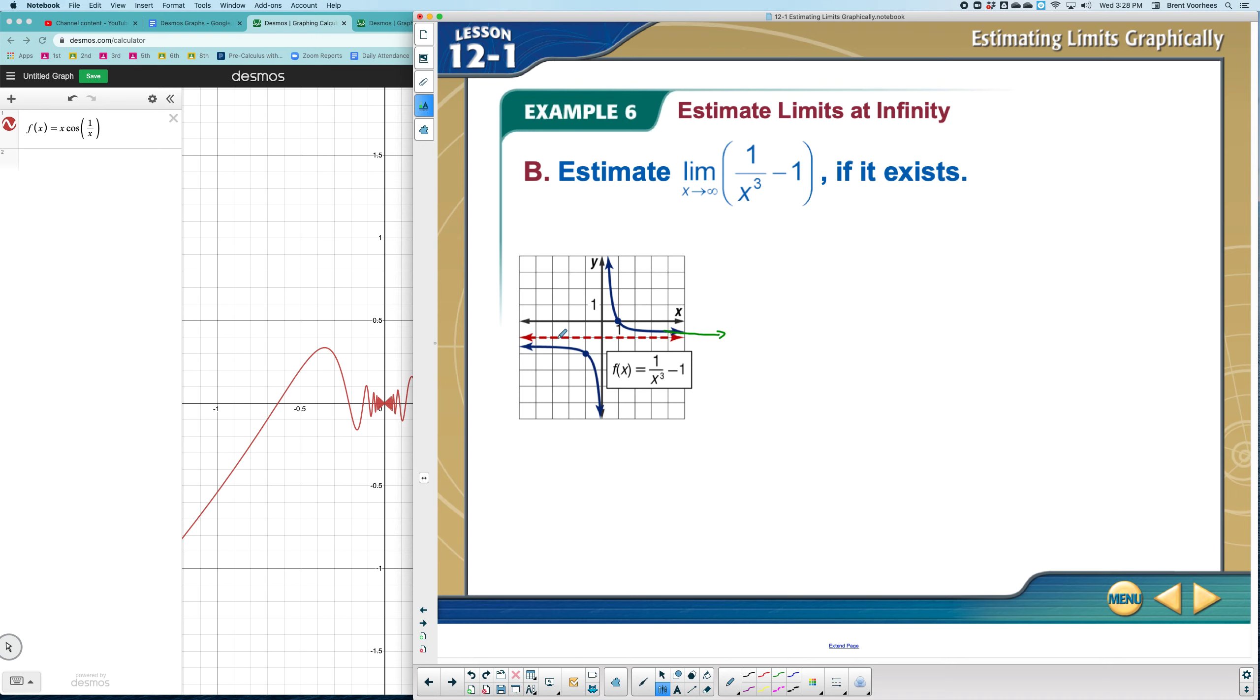Well, this graph is getting really flat along this horizontal asymptote that happens to be crossing the Y axis at negative 1. So the limit of, as X approaches infinity, of 1 over X cubed minus 1 would equal negative 1.